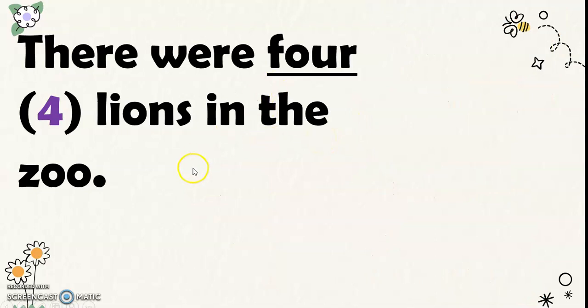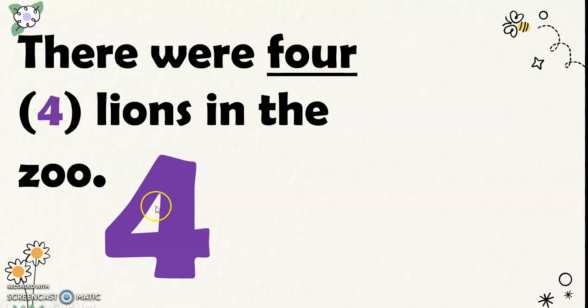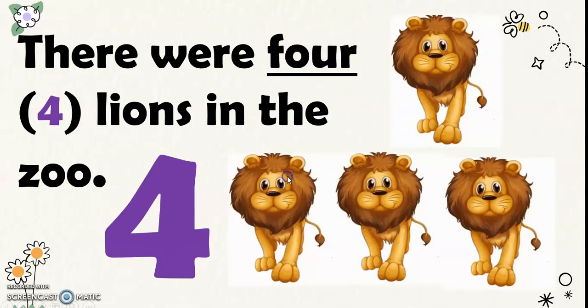Next, there were 4 lions in the zoo. This is the number word for 4, and this is the number symbol for 4. So, 4 lions.